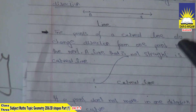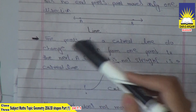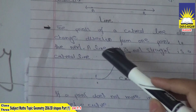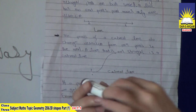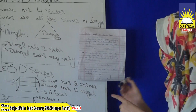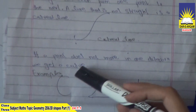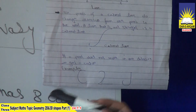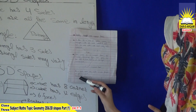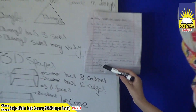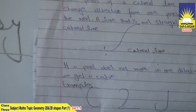Next we have a curved line. The points of a curved line change direction from one point to the next. A line that is not straight is a curved line. The line that does not move in one direction — in that case, we get a curve. For example, the alphabet C is a curved line, the digit 2 is a curved line, and the letter J is also a curved line.